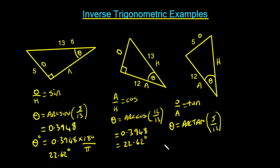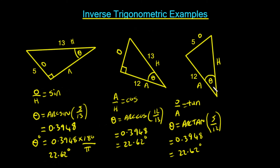Again it gives us the value in radians of 0.3948, and when we convert that to degrees it again gives us 22.62 degrees. In all three cases we have the same triangle and the same angle, but we worked it out using inverse sine, inverse cosine, and inverse tangent respectively.